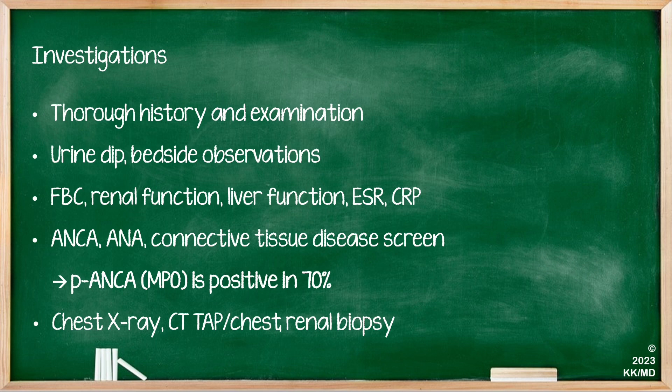You would then want blood tests including a full blood count — checking for anaemia and infection — as well as renal and liver function tests and inflammatory markers such as ESR and CRP, which are frequently elevated in vasculitis. You would also want to request an autoimmune panel including ANCA, ANA, and a connective tissue disease screen. In microscopic polyangiitis, it is very frequently P-ANCA or MPO that is positive, in about 70% of cases — this is an absolute must-know for MRCP Part 1 or Part 2 MCQs.